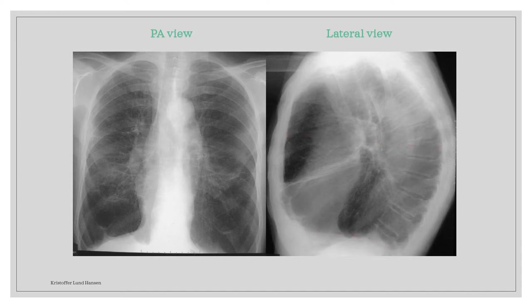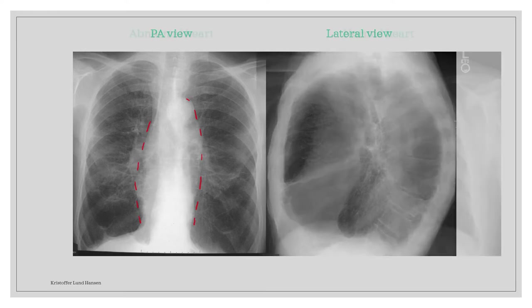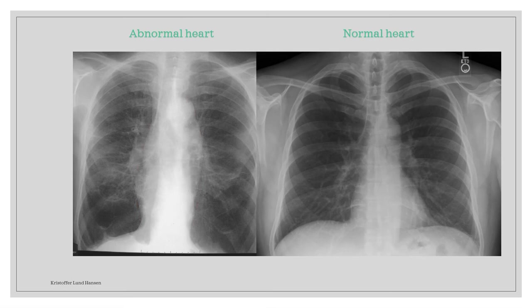If we take a look at the heart, we can see that it has a very strange shape. It looks abnormally small and has a kind of strange form. The form you can see here is what we call a droplet heart — a finding that can be seen in some patients with emphysema. In our case, on the picture to the left, we can see the droplet form of the heart, while in the right picture the heart has a normal size and form.